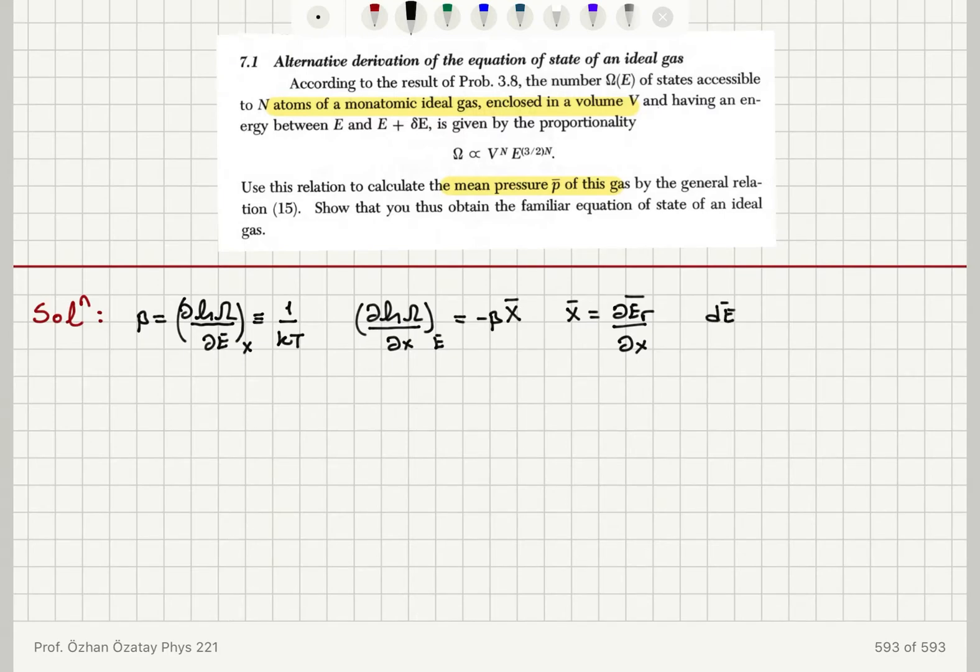We have dE bar is equal to x bar dx for the system. Now, if this is basically an adiabatic process, this would be equal to d bar W, which is minus p bar dV.